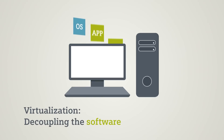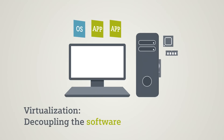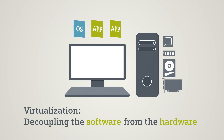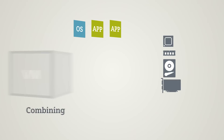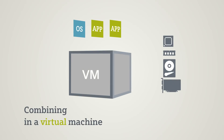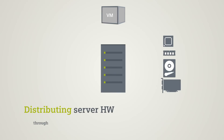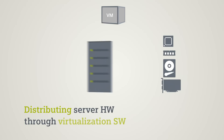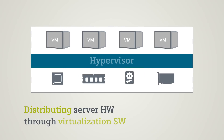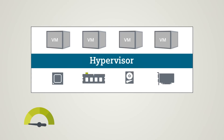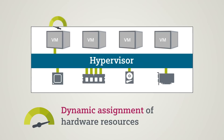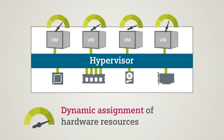Virtualization separates a computer's operating system and user software from its hardware. Both are brought together in a virtual machine. A hypervisor is integrated as an additional software layer on a powerful server. This manages the PC's hardware resources and distributes them dynamically over the virtual machines.